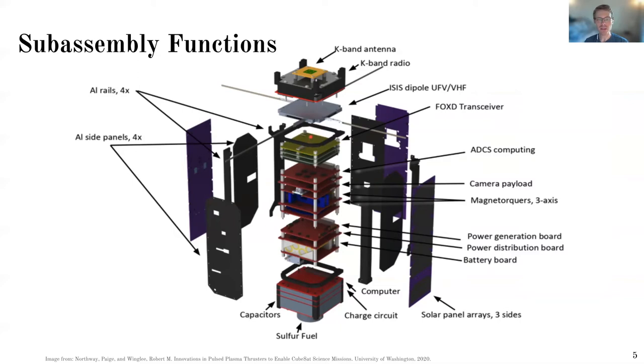And then beyond these subsystems, the actual structure is quite simple. So there's just a top ring and a bottom ring. And then there's four rails that bolt onto it. And then there's these panels that bolt onto the rails. And then on the very outside, three of the sides have the PCBs that have the solar panels mounted to them.